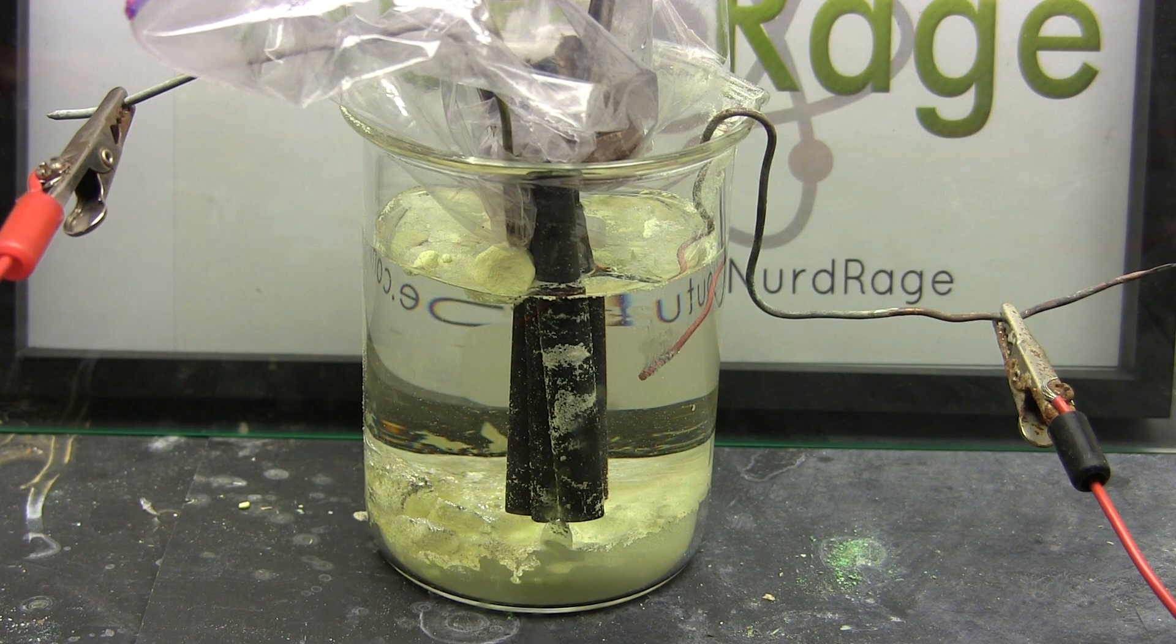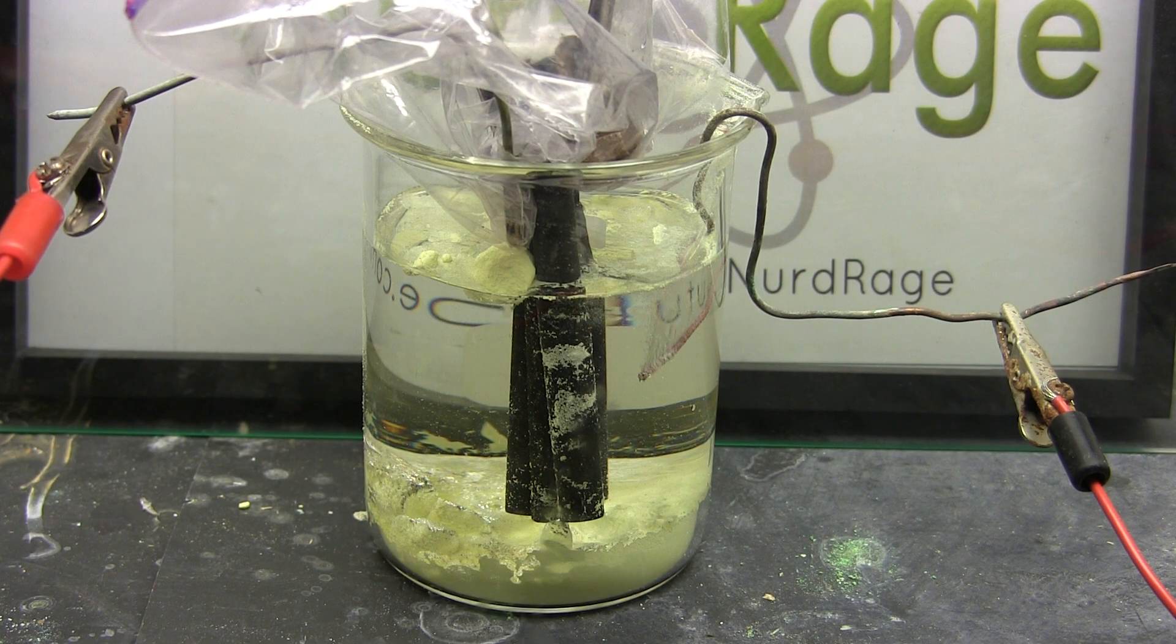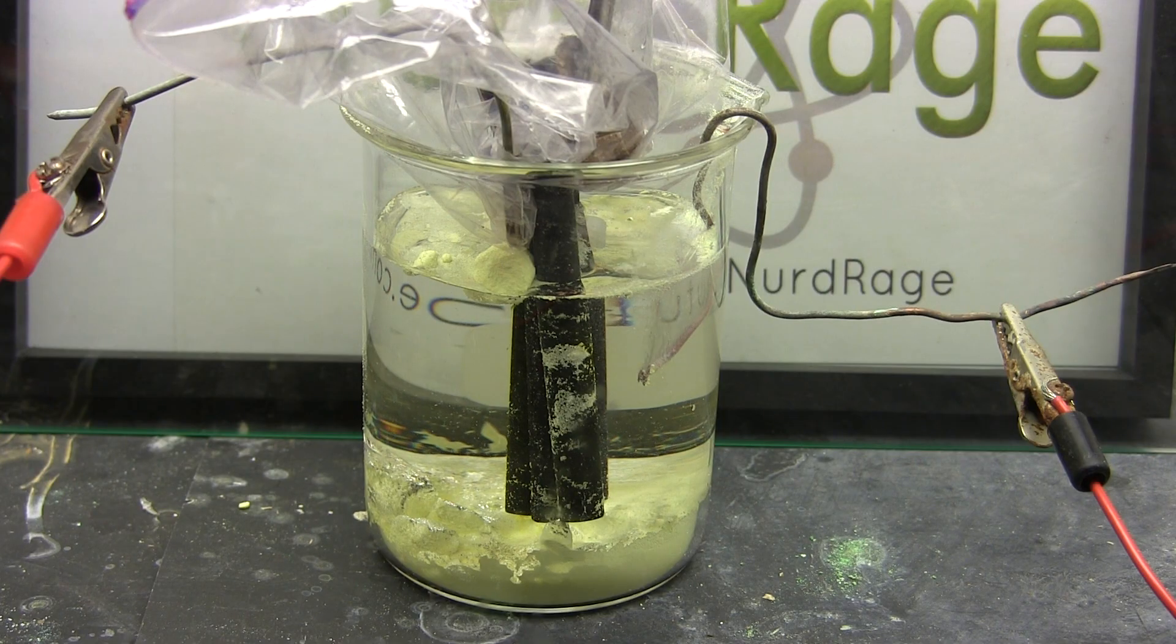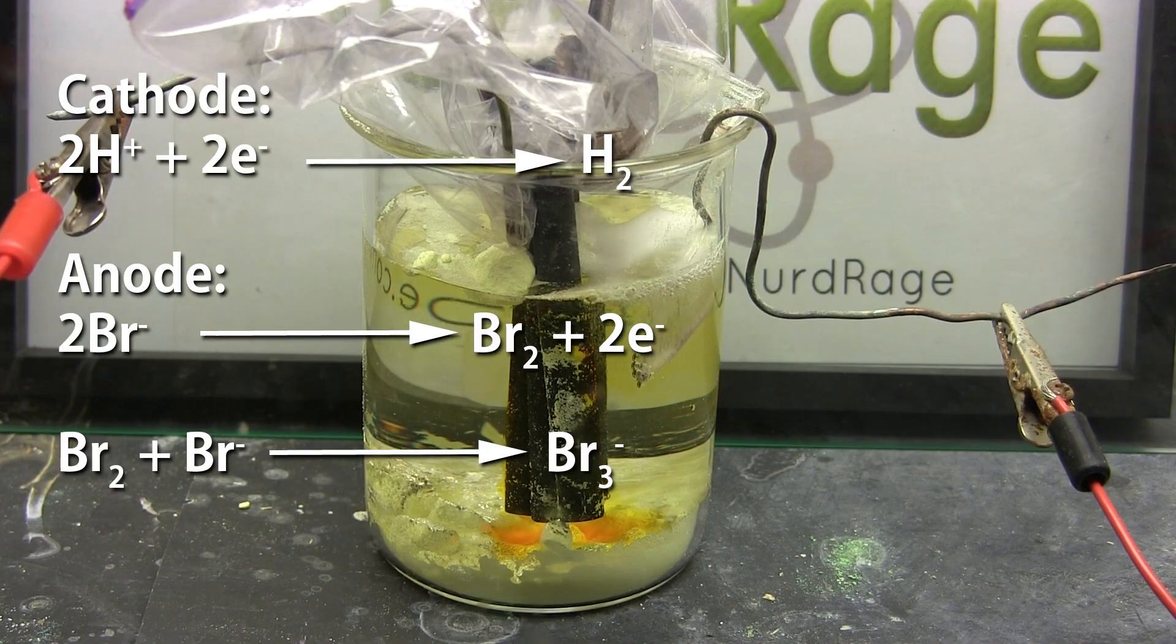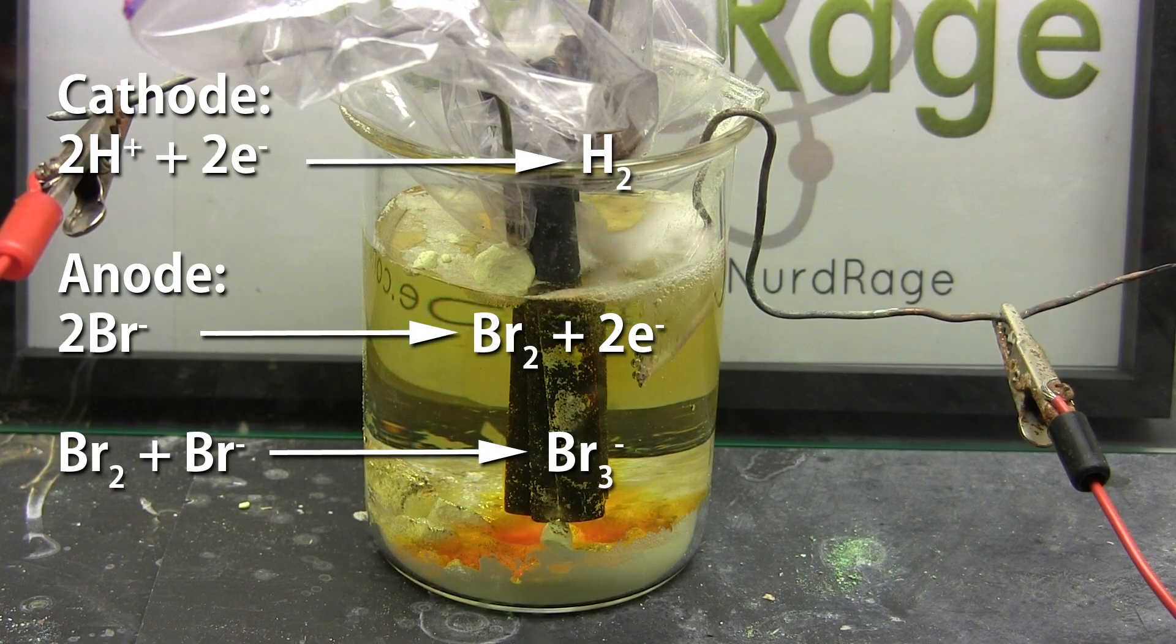Now we turn on the current. I'm using 2 amps. This might be too much but this is the first time I'm doing this so gotta start somewhere. What's happening is that at the cathode we're generating hydrogen gas. At the anode we're oxidizing the bromide ions to bromine.